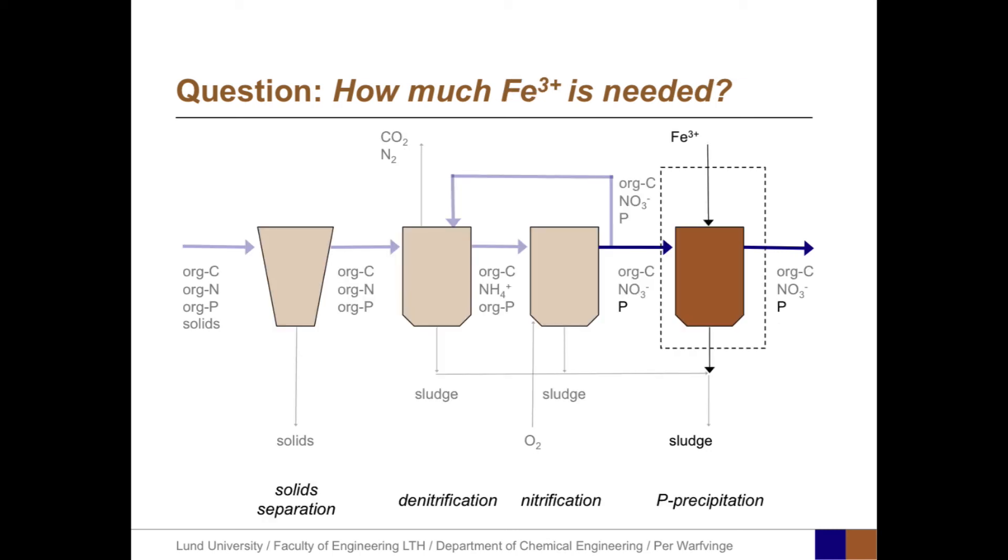For how much iron is needed, we can restrict our analysis to the final physical entity of the water treatment plant. We draw the system boundary around this entity. We have two input fluxes: phosphorus from the left and iron from above. We have two output fluxes: treated water with phosphorus, and sludge.